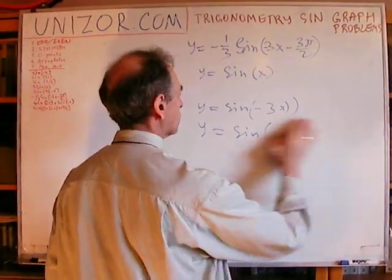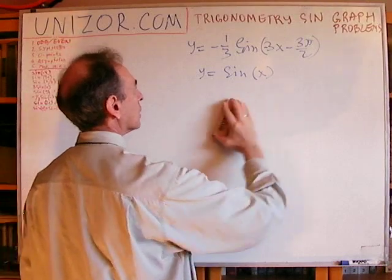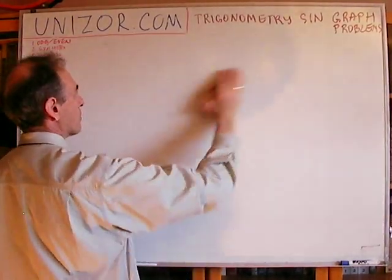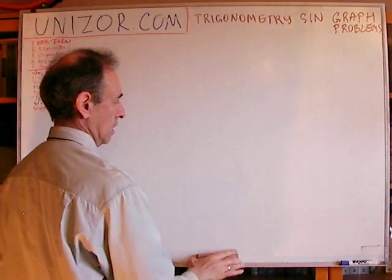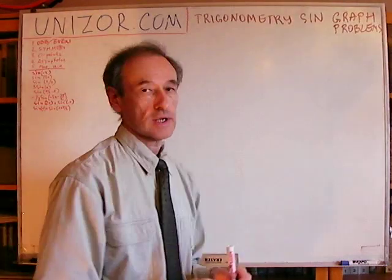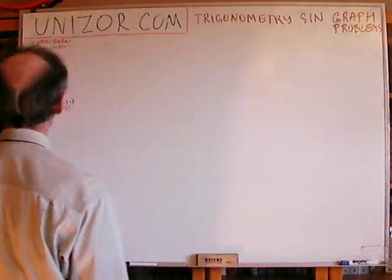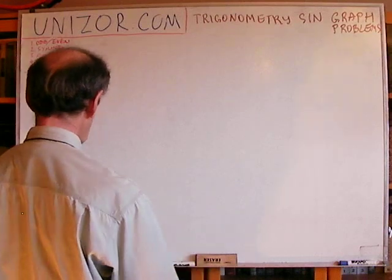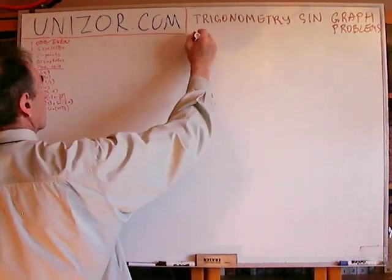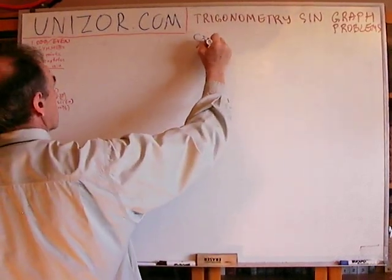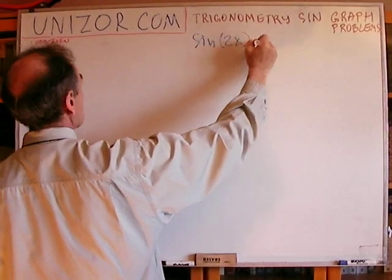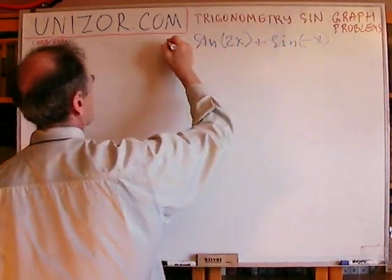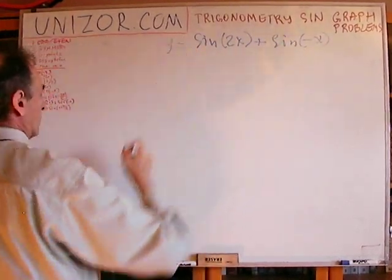So far, everything I was doing was related to general properties of graph transformations. Next is slightly different: sin(2x) + sin(-x). That's interesting.